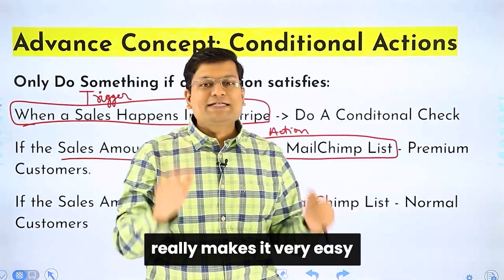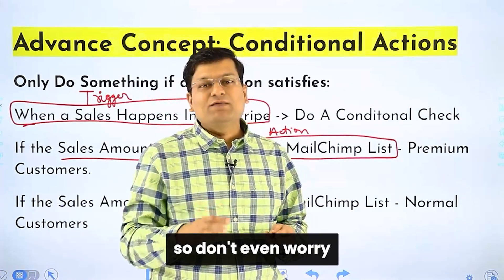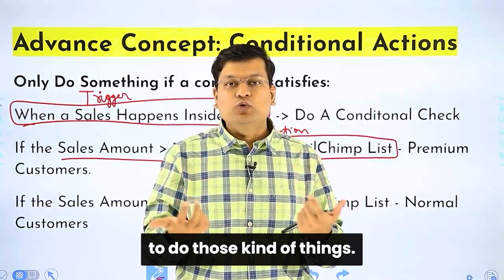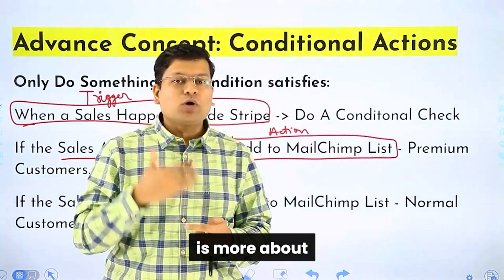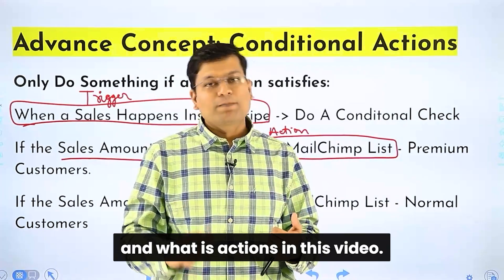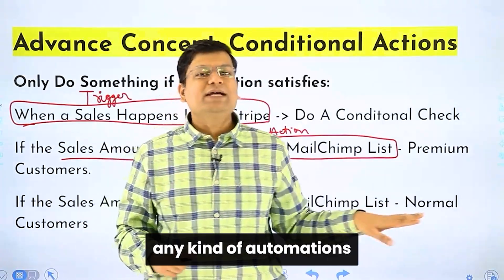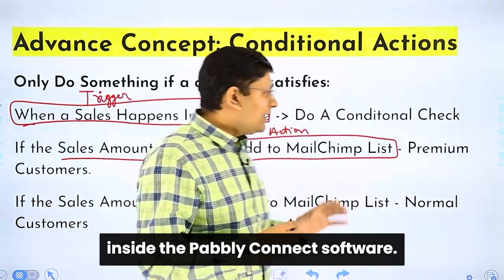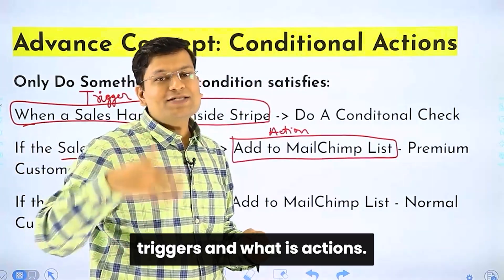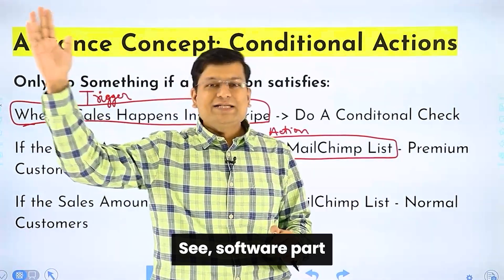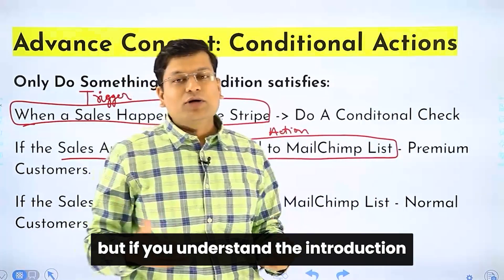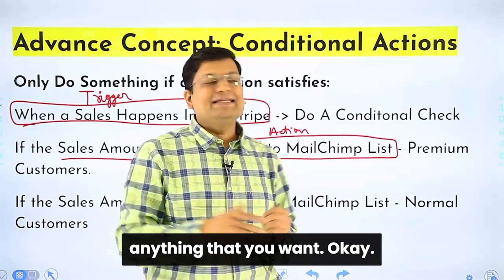Software like PablyConnect makes it very easy to set up these conditions. Don't worry about how these things will happen — we make it very simple for you. This video is more about an introduction to automation. You must learn what triggers and actions are. If you understand what triggers and actions are, you can pretty much do any kind of automation inside PablyConnect. That is why I created this video — I just wanted you to understand triggers and actions. Once you understand those concepts, the software part will always follow. If you understand the core fundamentals, you can do pretty much anything you want.